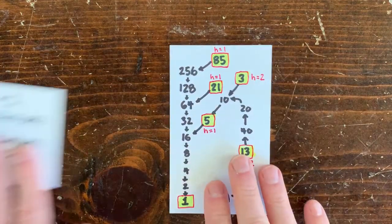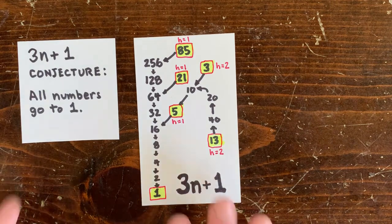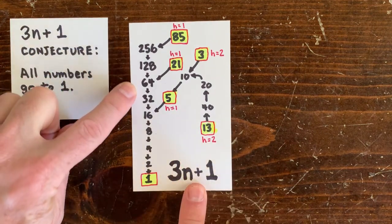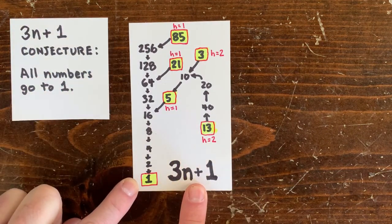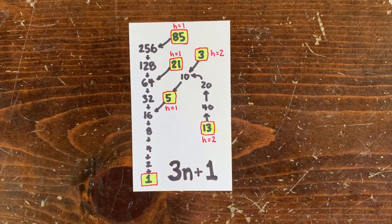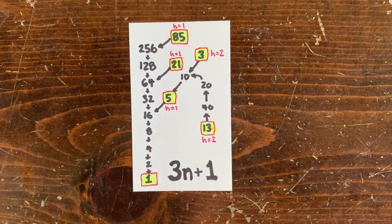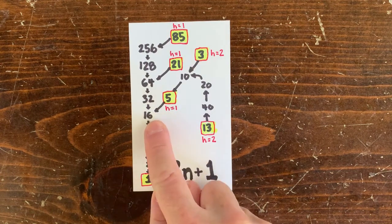Let's start with the 3n plus 1. Here's the spine, all of the powers of 2. If a number connects directly to the spine, like 5, we say it has height 1. That means it takes one step to get to the bottom.